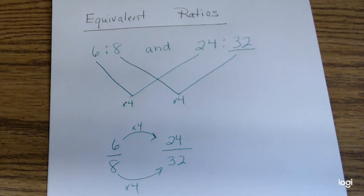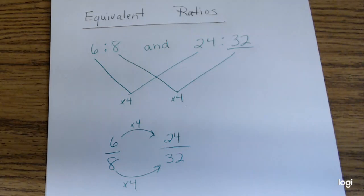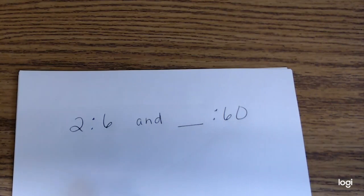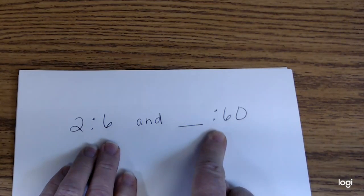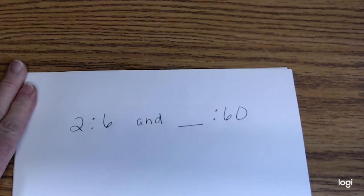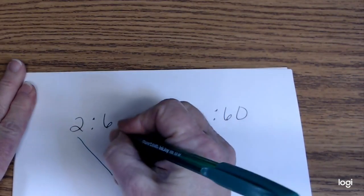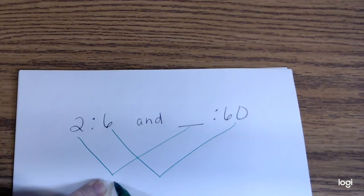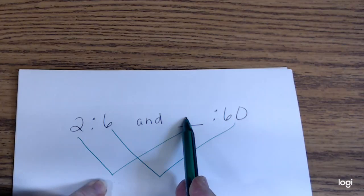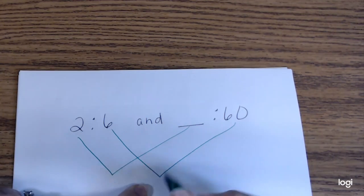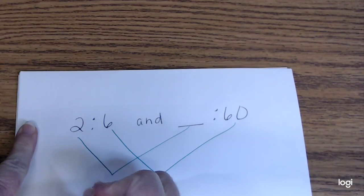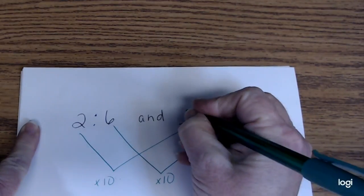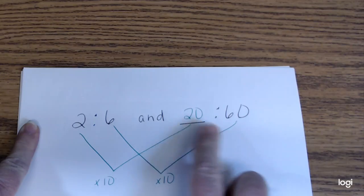I'm going to give you another one, and I want to see if you can find the integer that will make it equivalent. The ratio is 2 to 6. First number to first number, second number to second number. I don't know what the first number is multiplying by, but I do know that 6 times 10 is 60. In order for this to be equivalent, I multiply by the same number, so the equivalent ratio would be 20 to 60.